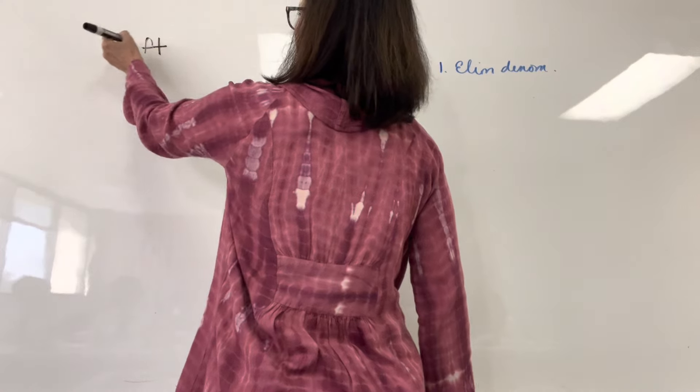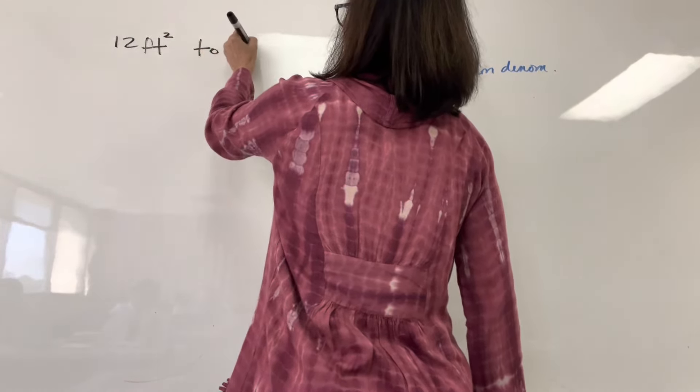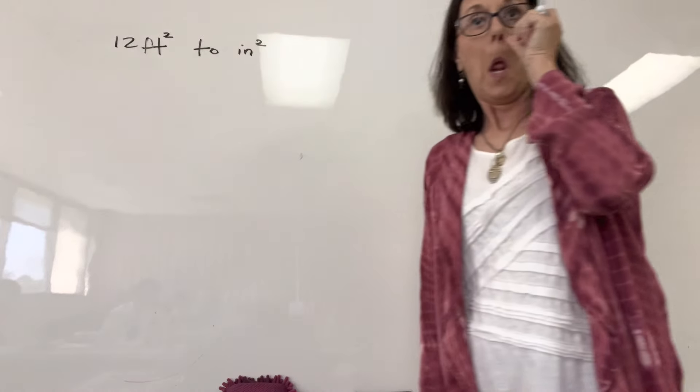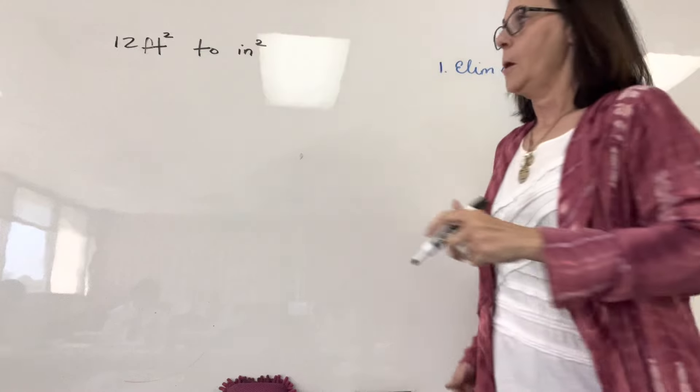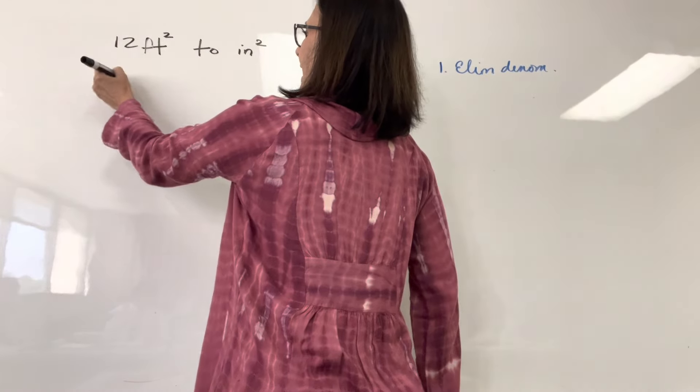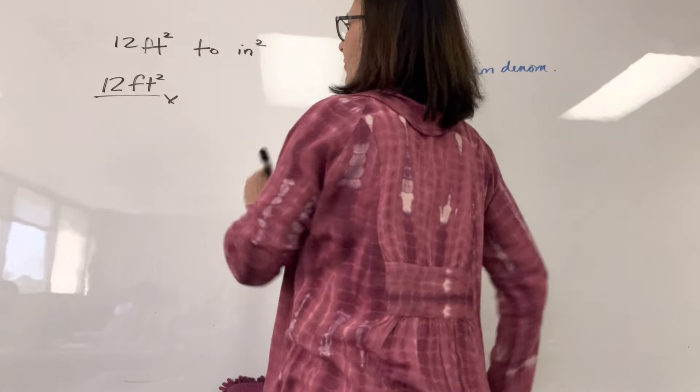If I want to go from 12 feet squared to inches squared, I begin with 12 feet squared. When I have a unit multiplier, in order to cancel out feet...